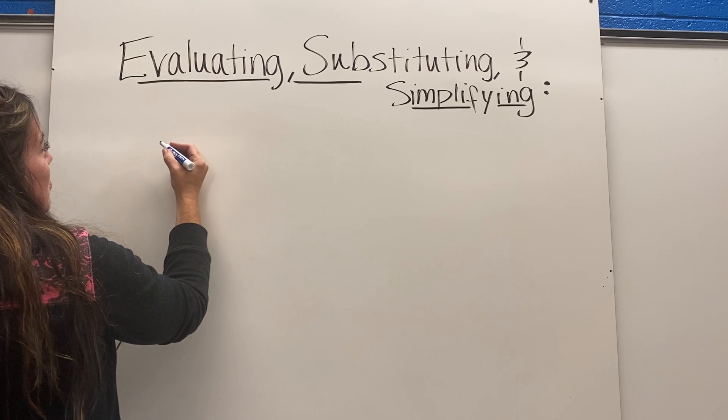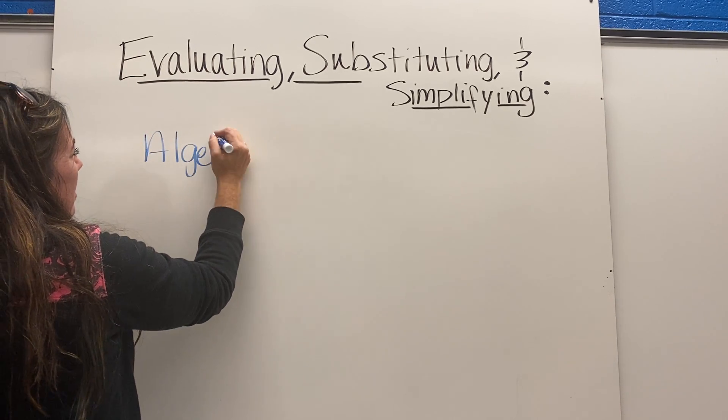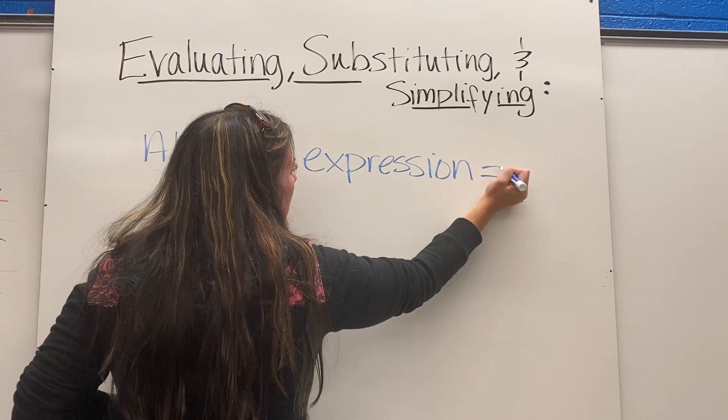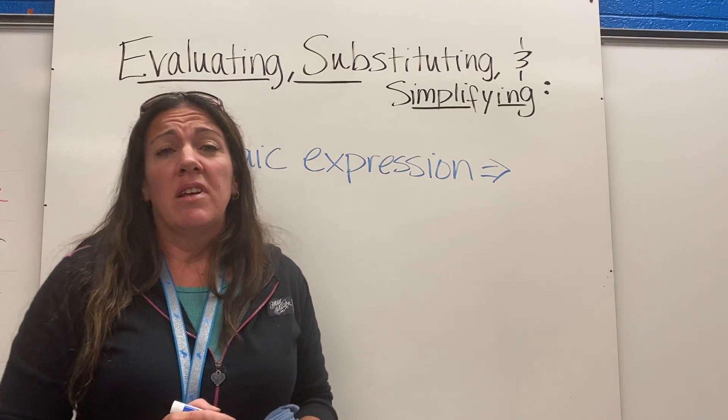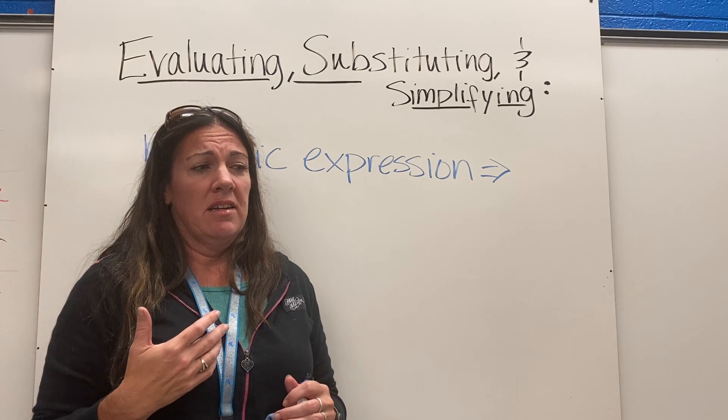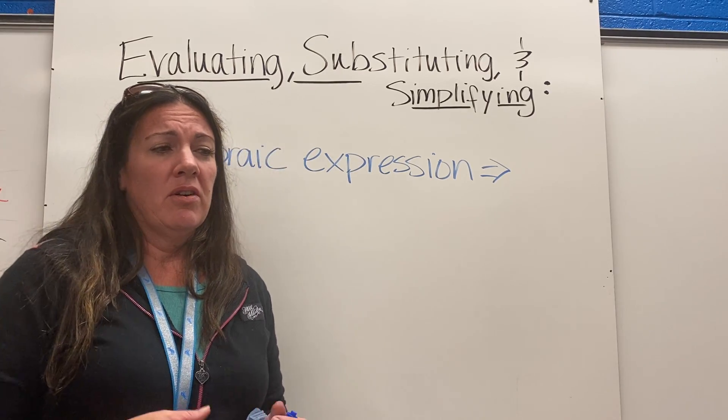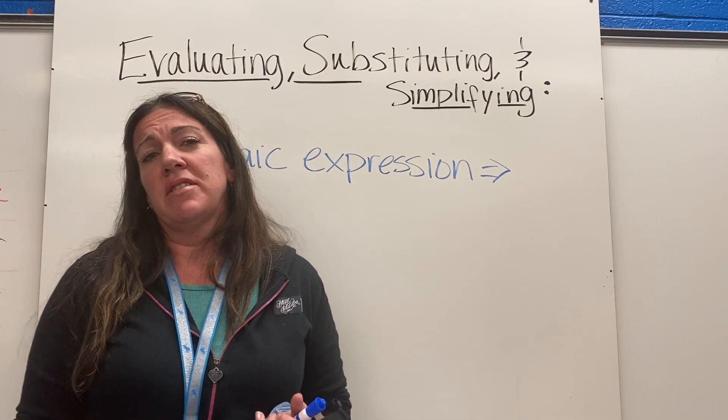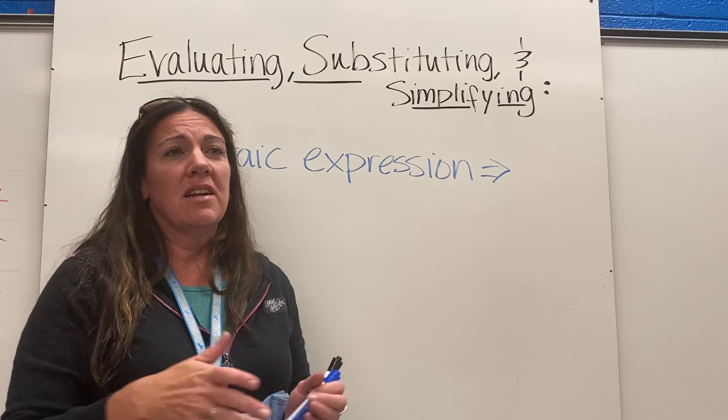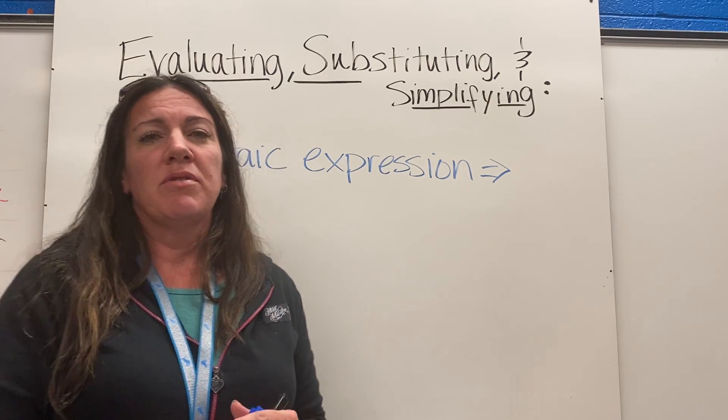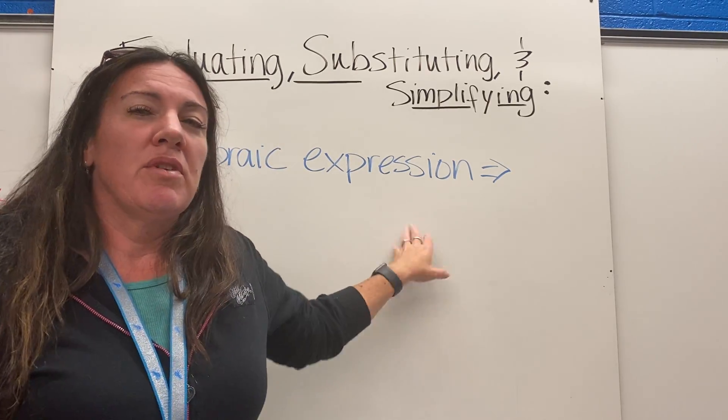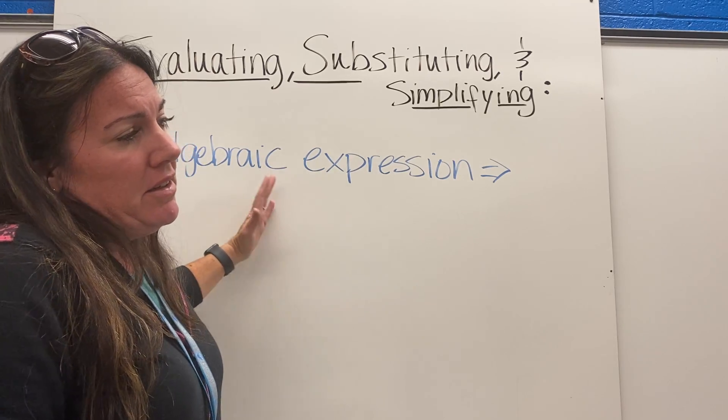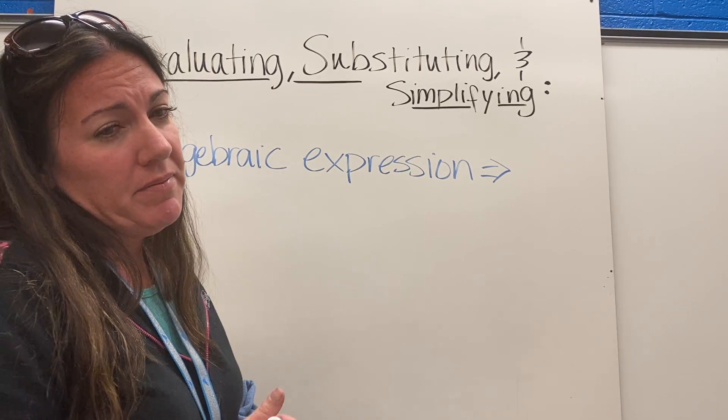Next we have an algebraic expression. An expression is like an equation but no equal sign. I like to think about an equation as being like a sentence in language arts. It has a beginning and an end, that's what makes it a sentence. An expression is kind of like if you were to just take a little part of that sentence out, it's sort of like a phrase. An algebraic expression is really an expression that has one or more variables.